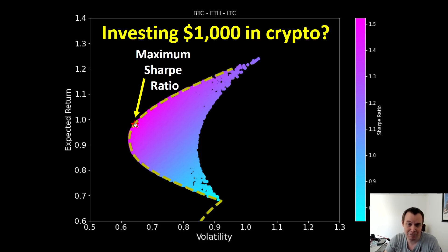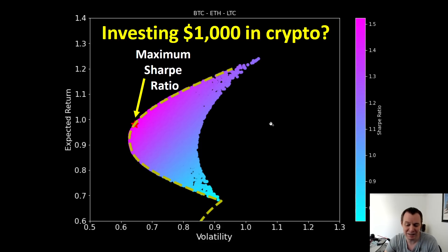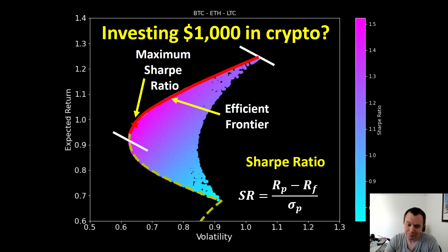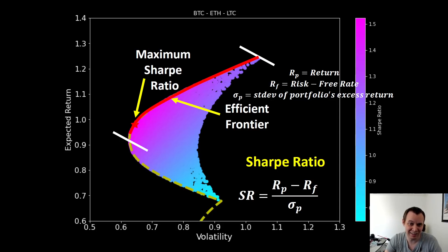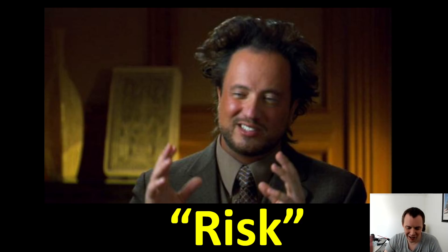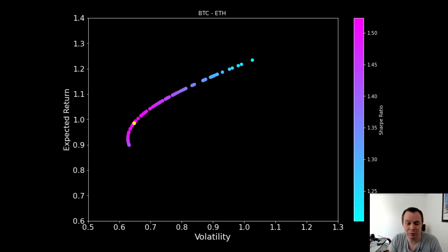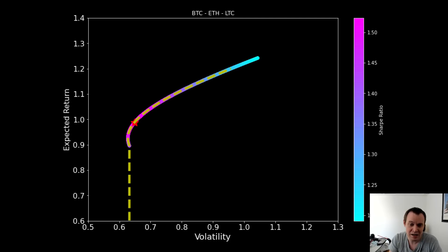If you pick a portfolio below the efficient frontier, you're taking on the same risk as a portfolio above it but with a much lower projected return — that's a poor risk-adjusted outcome. The red star marks the maximum Sharpe ratio. The Sharpe ratio formula is: S = (Rp - Rf) / σp, where Rp is the return, Rf is the risk-free rate, and σp is the standard deviation of the portfolio's excess return. We used 100,000 Monte Carlo simulations to identify this.